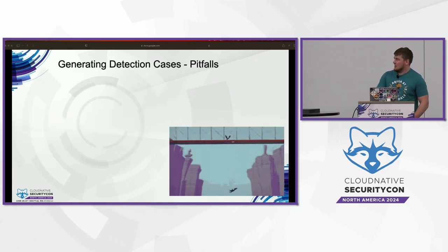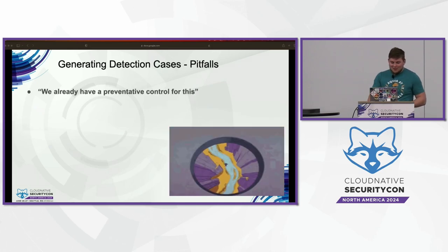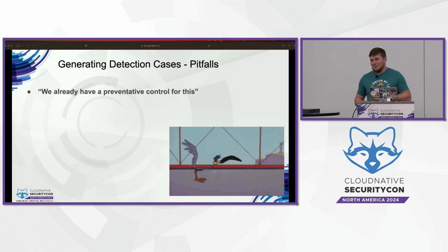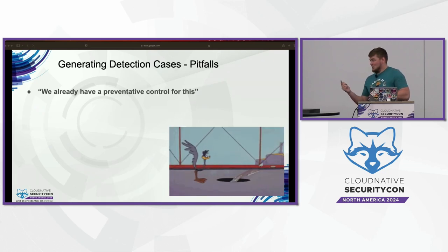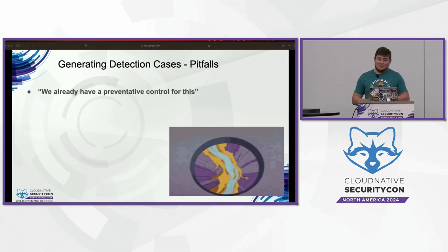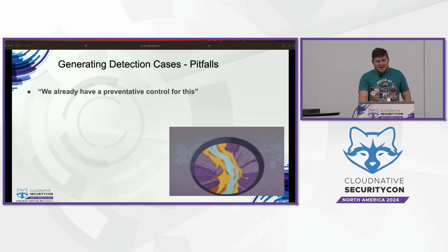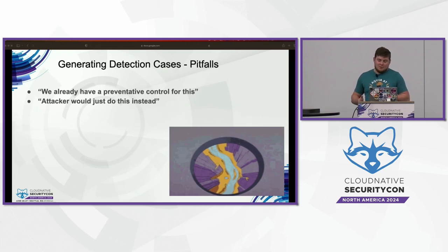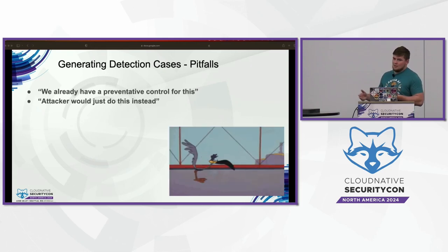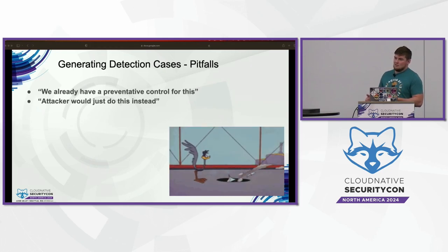Before we look at actual log examples, let's talk about common pitfalls when building detections. The first is 'we already have a preventative control for this.' My response is: great, this is an amazing detective control because if it ever fires, it's going to be really high fidelity — that means either our preventative control got turned off, it's not configured the way we thought, or something strange is going on. You need both in reality. The second pitfall is 'an attacker would just do this instead.' The reality is a lot of this has to be informed by your threat model and risk posture. Not everybody is dealing with nation-state or APT-level threats, and even then attacker sophistication varies — attackers make mistakes too. A detection that's simplistic and might be circumvented is not necessarily bad as long as you consider that.